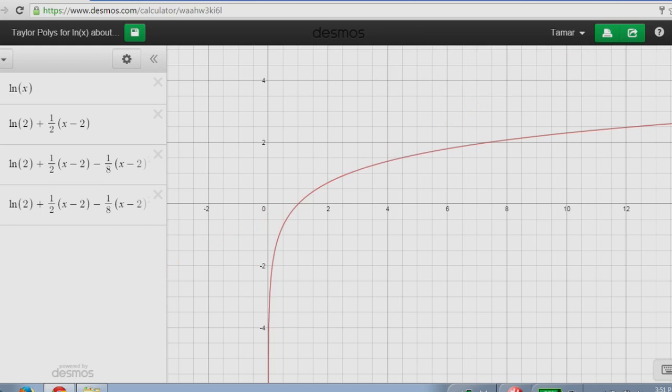Let's take a look at the second degree Taylor polynomial. Quite a bit better, it mimics the concavity as we would expect. The second degree Taylor polynomial generated about x equals 2.